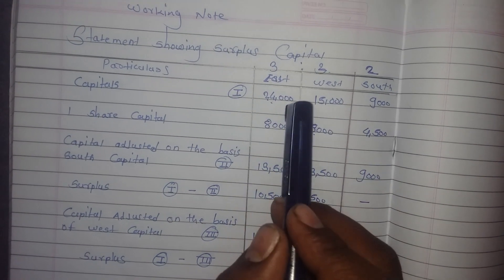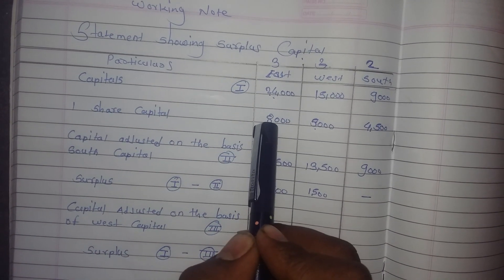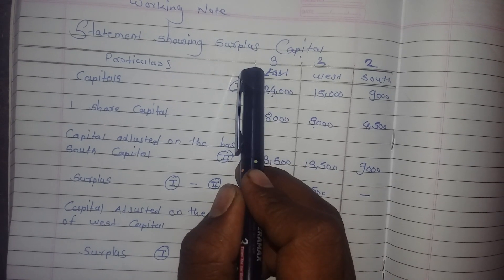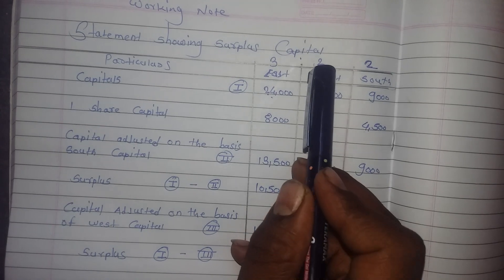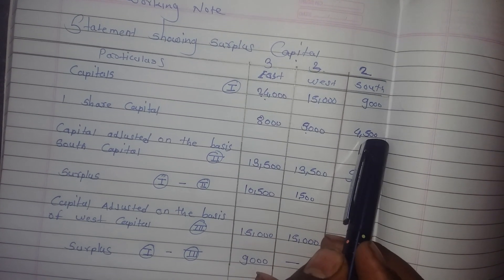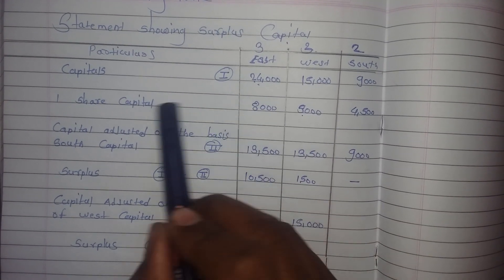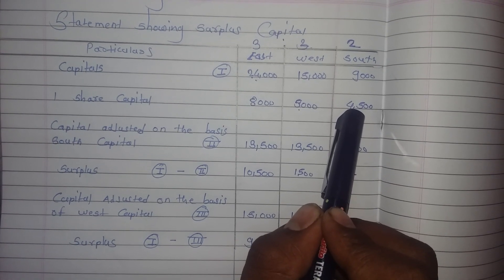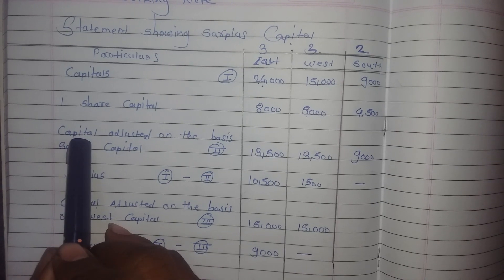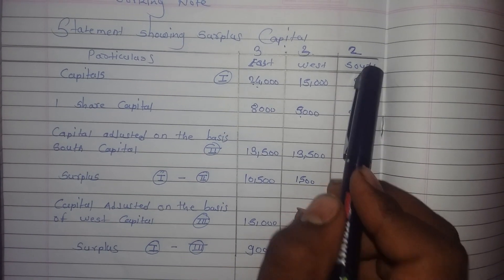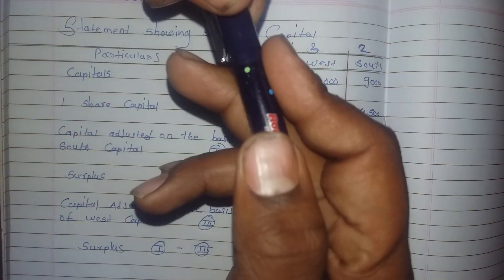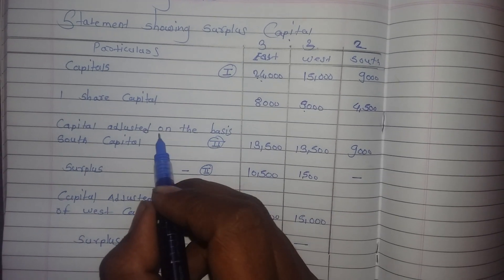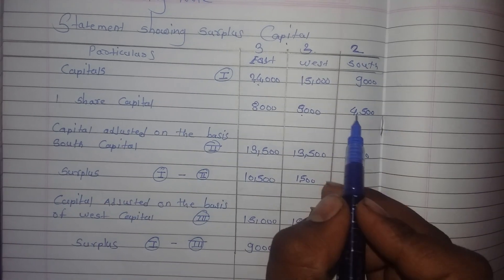We calculate one share capital by dividing each partner's capital by their profit ratio: 24,000 ÷ 3 = 8,000; 15,000 ÷ 3 = 5,000; 9,000 ÷ 2 = 4,500. We check which is the lowest one share capital. South's one share capital of 4,500 is the least, so we adjust capital on the basis of South's capital. South's one share capital is 4,500.